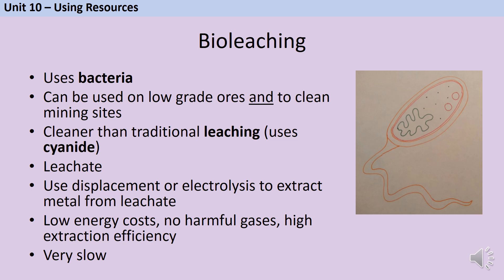In terms of advantages, bioleaching has very low energy costs - we're not doing chemical reactions, heating things up, or using furnaces; the bacteria just get on and do it for us. It doesn't release any harmful gases, there's no CO2 production so no greenhouse gases, and it has pretty high extraction efficiency, extracting about 90% of the metal left in the soil. The downside is that it's very slow and there isn't really a way to speed it up. It's not like a chemical reaction where you can add heat or a catalyst - you just have to wait for the bacteria.